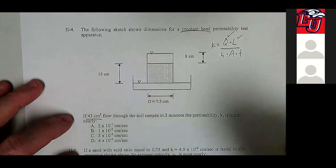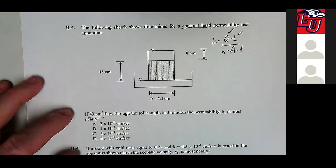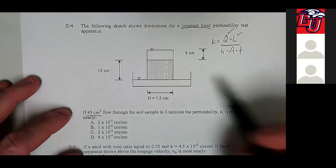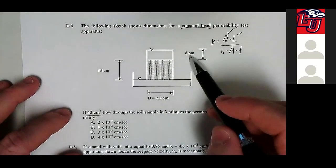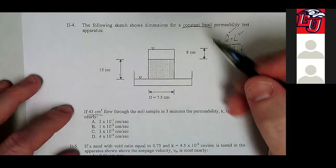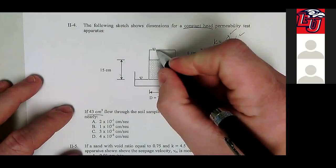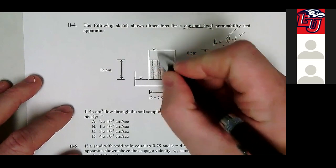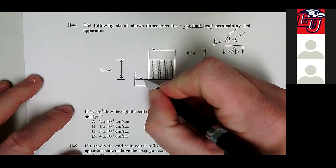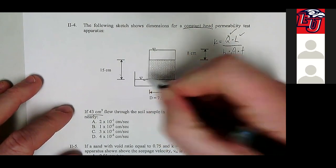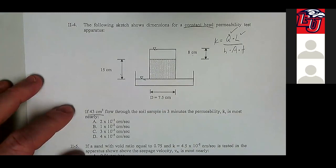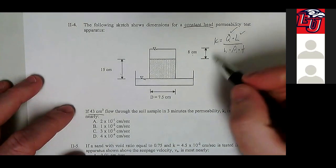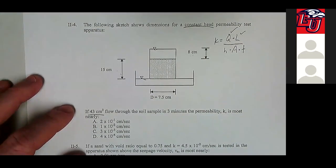Remember, this is where the problem will trick you up — people ask is this H or is that H? Well, neither one. H is the difference between these two water level symbols. It's the height of water actually applying head or pressure on the soil sample. So H is equal to 8 plus 15, or 23 — that would be H.